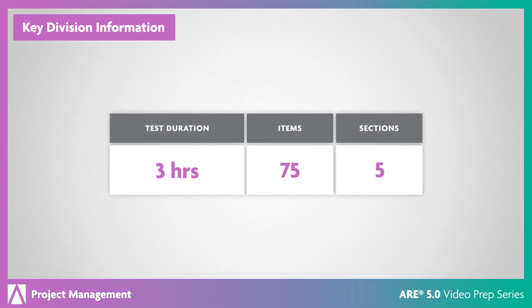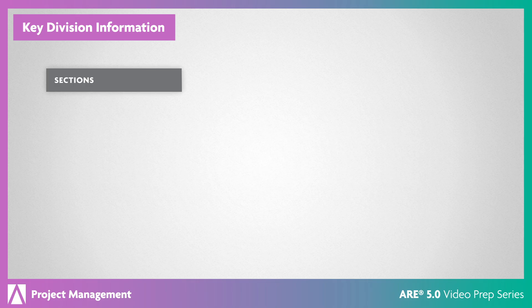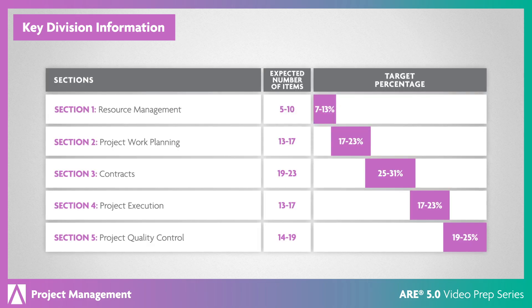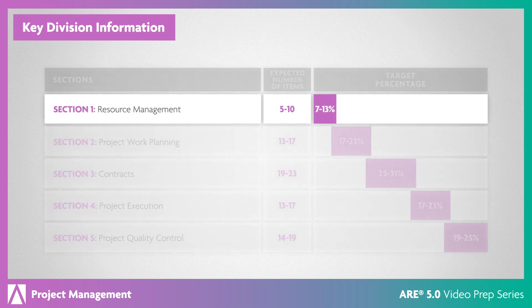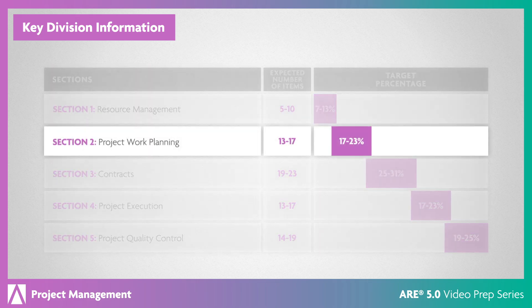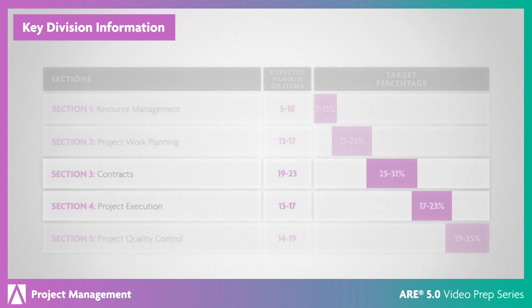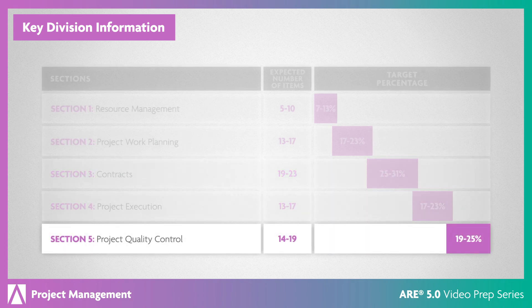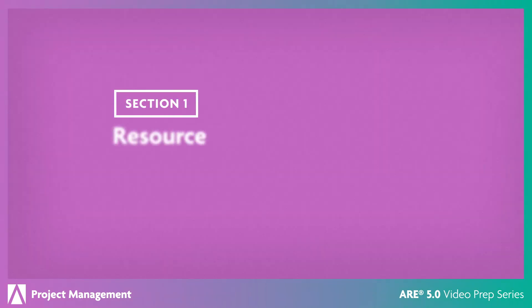You'll have three hours to answer 75 questions in this division. The content is distributed between resource management, project work planning, contracts, project execution, and project quality control. Once you have a signed contract, it's time to determine what resources you'll need to execute the project.